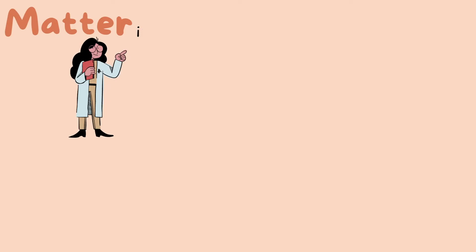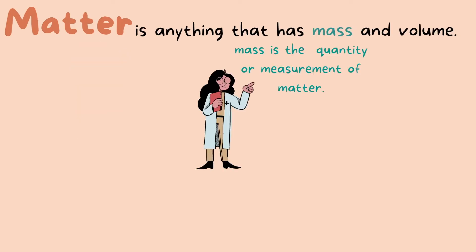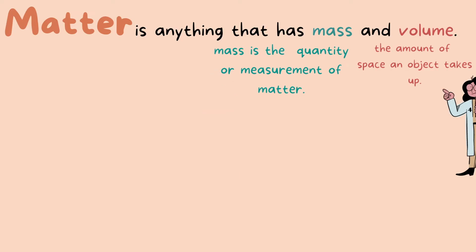What is matter to begin with? Matter is anything that has mass and volume. Mass is the quantity of matter or the measurement of matter. Volume is the amount of space something takes up. So we can also say that matter is anything that has weight and occupies space.